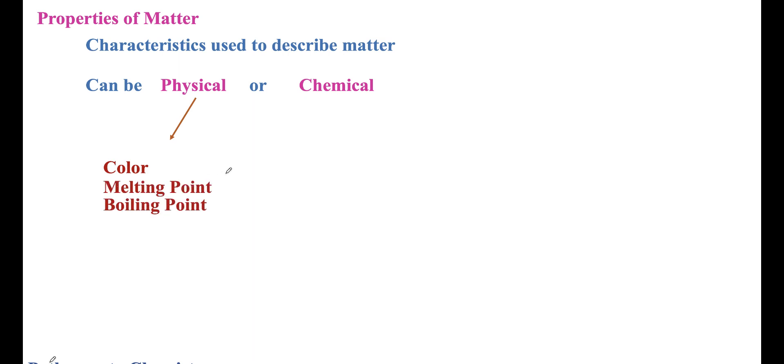So let's talk a little bit about the properties of matter. Properties are characteristics that we use to describe matter. Properties can be physical or they can be chemical. Some examples of physical properties would be color, melting point, boiling point, density of a substance, ductility.